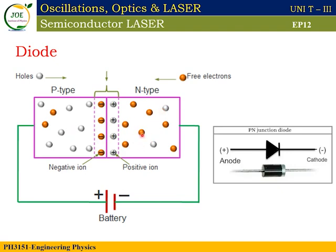In a PN junction diode, a battery is connected with the P-type at the positive terminal and the N-type at the negative terminal. This is called forward bias. In this connection, holes in the P-type and electrons in the N-type are connected. You know that holes are positive and electrons are negative — they attract each other.